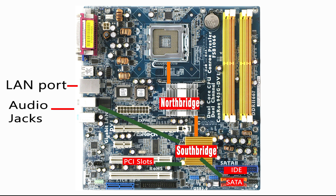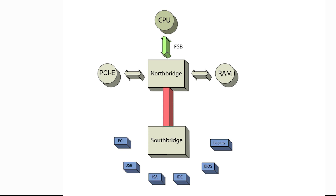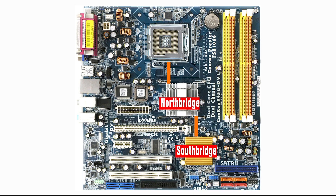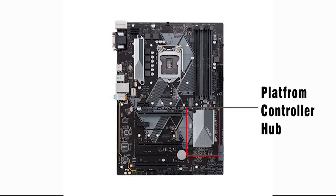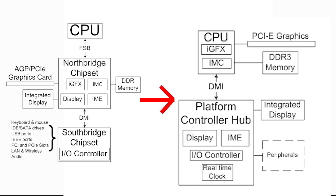As CPUs improved, the limitations of data transmission between the CPU and the chipset couldn't keep up, causing a bottleneck. As a solution, the Northbridge and Southbridge were rearranged on modern motherboards. The Northbridge functions were eventually eliminated completely — the memory controller and PCIe Express lanes are now incorporated directly into the CPU.